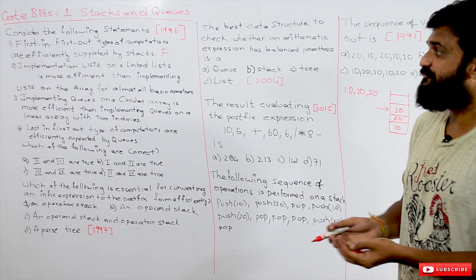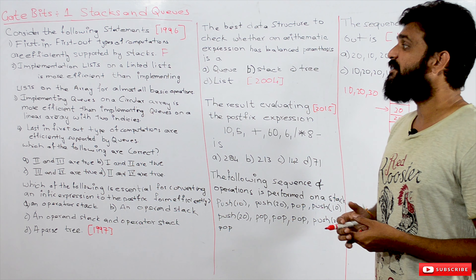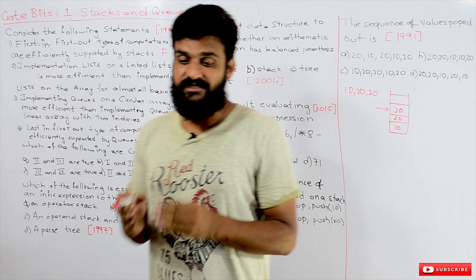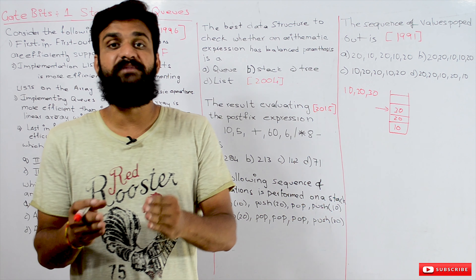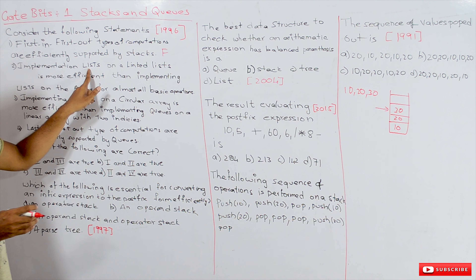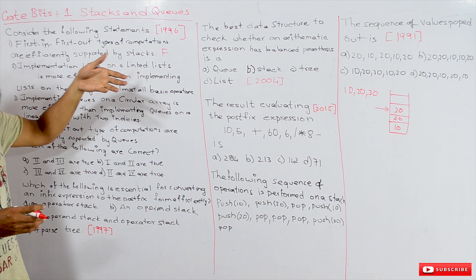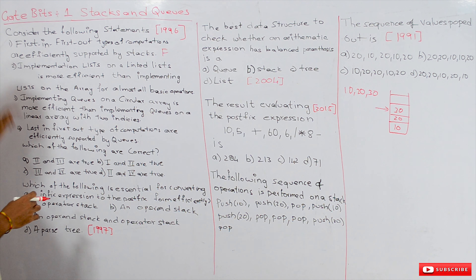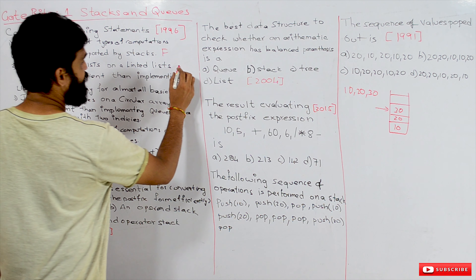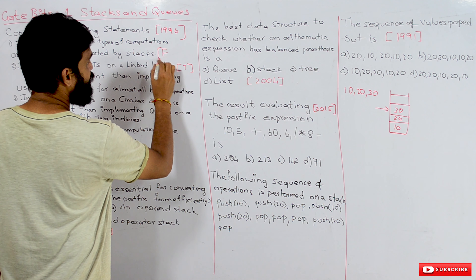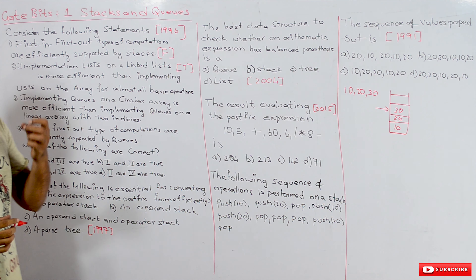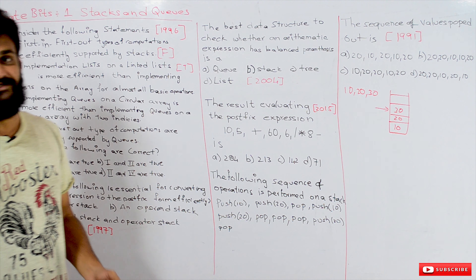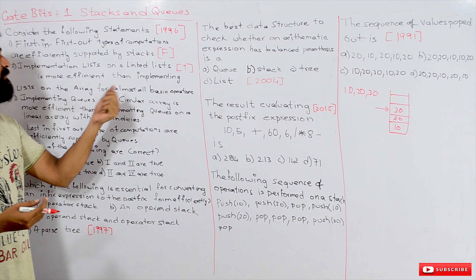The next statement is: implementation of a list using linked list is more efficient than implementing the list on an array for almost all basic operations. A list can be efficiently implemented using a linked list — it cannot be done efficiently using arrays. So this statement is true.